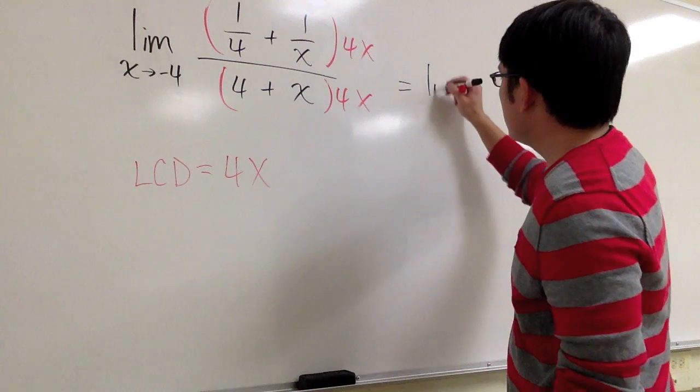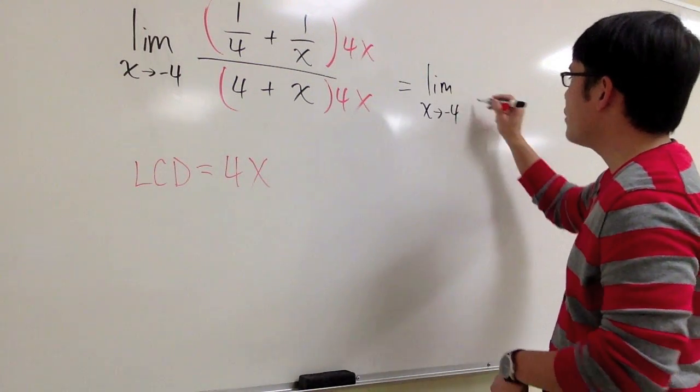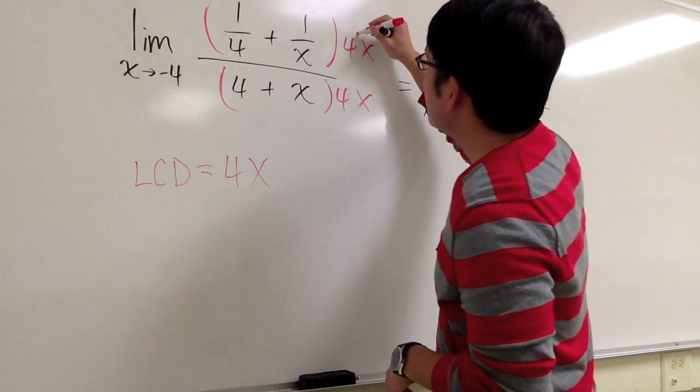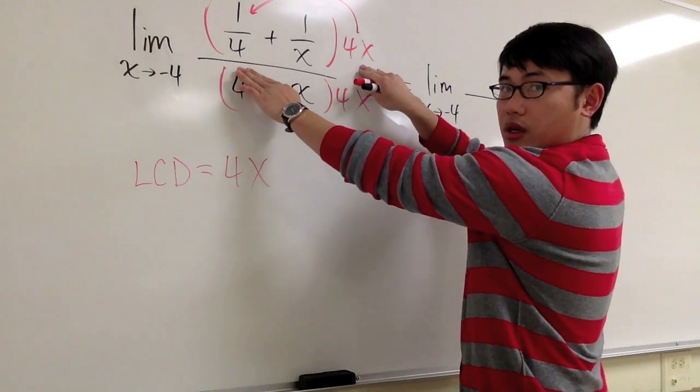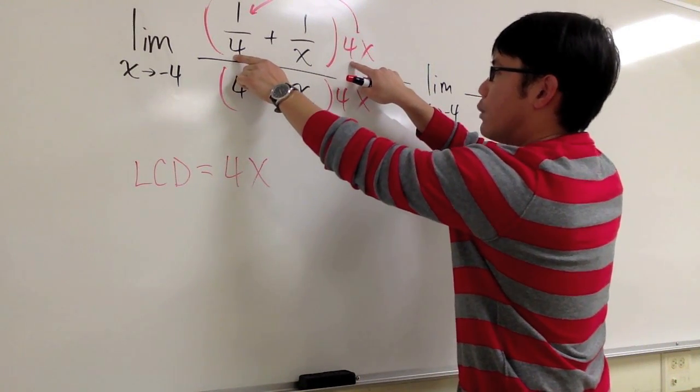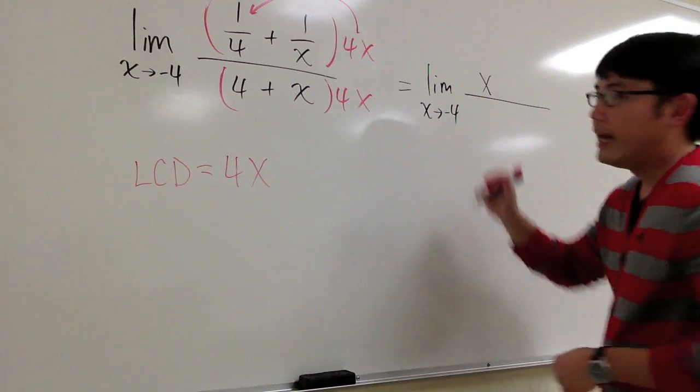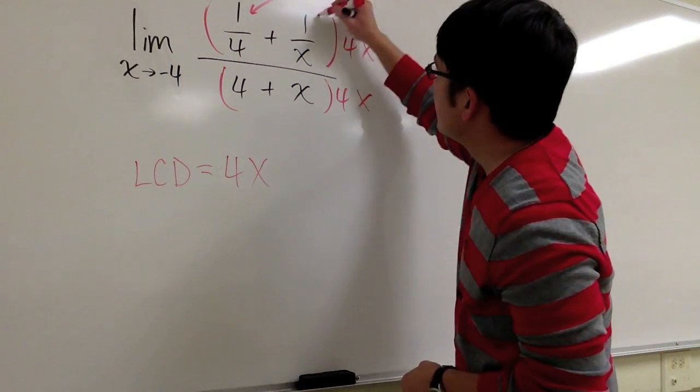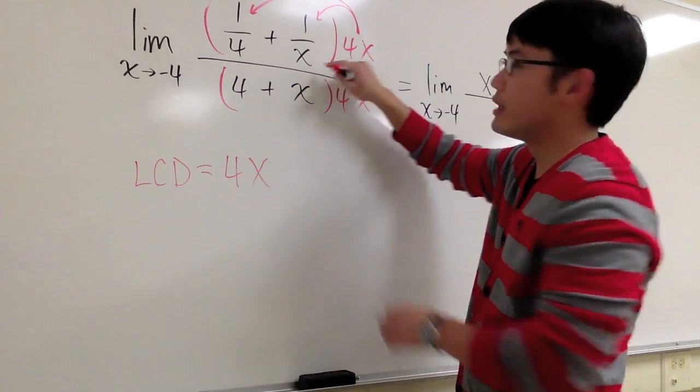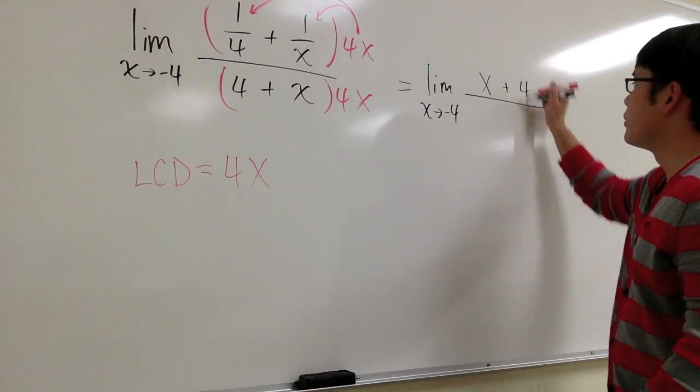So this is going to give me—let me still write down the limit when x approaches negative 4. On the top, multiply 4x with 1 over 4. As you can see, the 4 and the 4 right here cancel each other out. I will just have an x. And take 4x, multiply with 1 over x. The x cancel out, so I will just get plus 4 on the top.